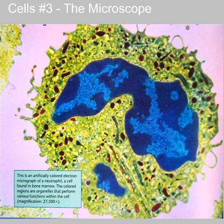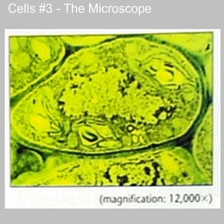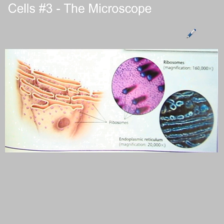This is a neutrophil cell which would be found in bone marrow. At this magnification, we can start to see that there are lots of different organelles inside the cell. Here we see an electron microscope micrograph of a plant cell. At this high magnification — 12,000 times — you can see lots of different organelles. We can magnify even further and start to see the detail of these organelles.